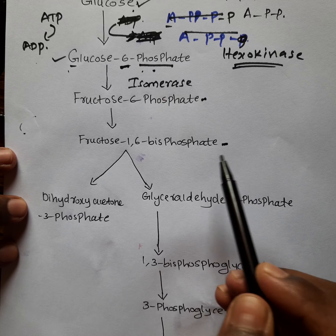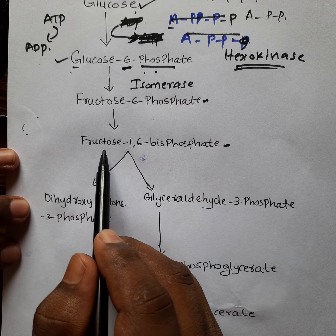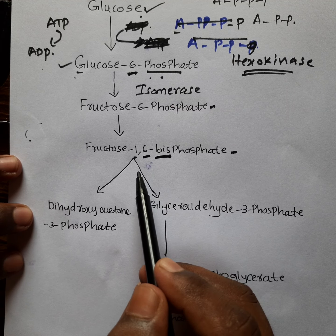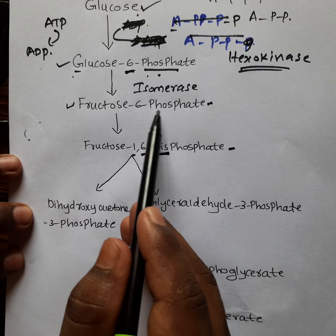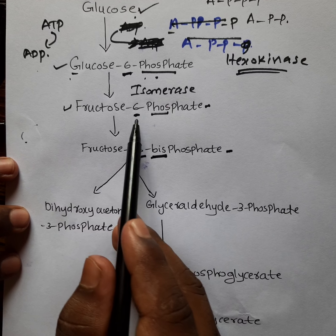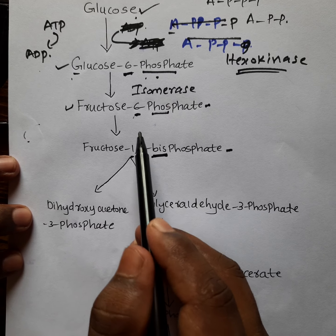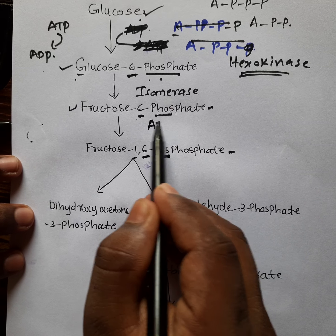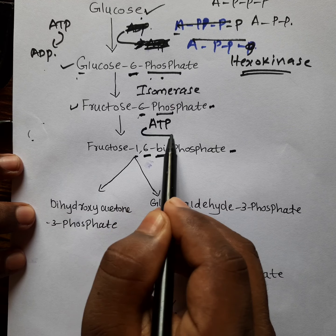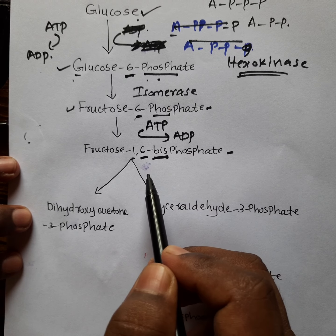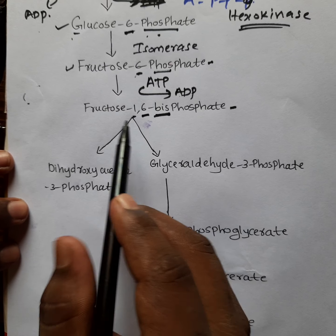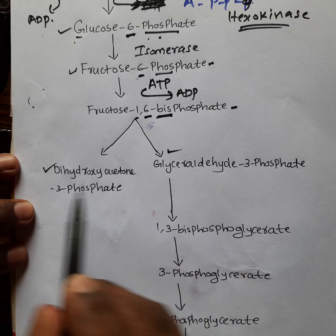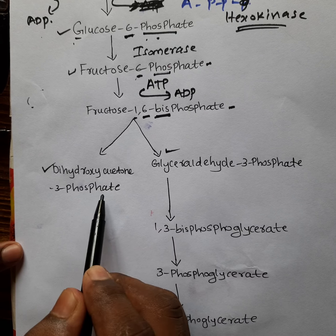Next, fructose 6-phosphate converts into fructose 1,6-bisphosphate. In fructose 1,6-bisphosphate, you can see two phosphate groups at the first and sixth positions, whereas fructose 6-phosphate has only one phosphate group at the sixth position. During this conversion, an extra phosphate is added, given by ATP, which converts into ADP.